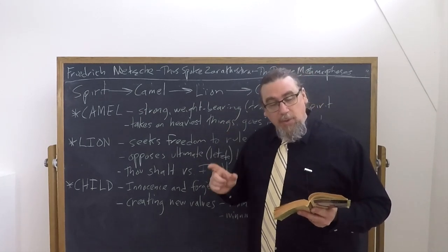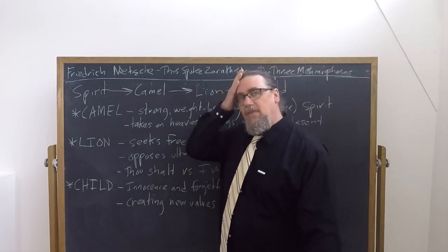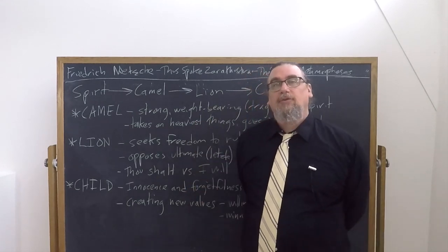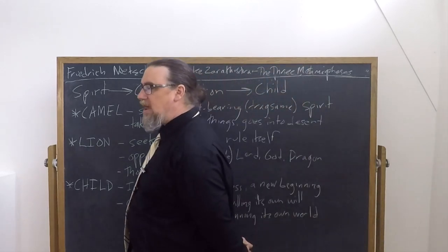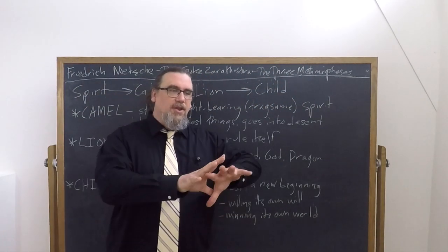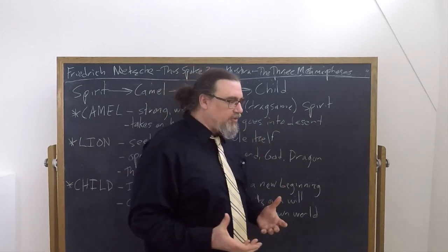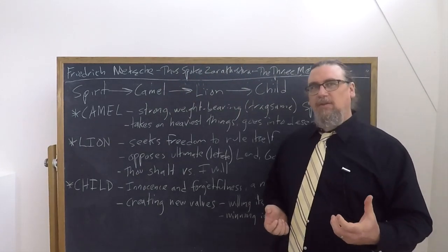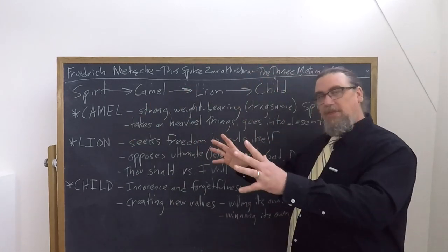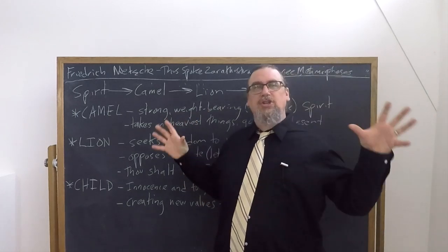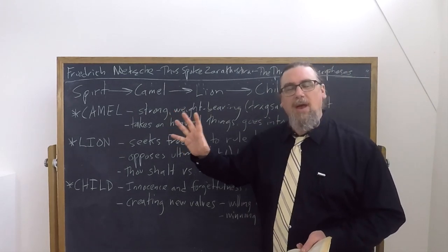So Nietzsche goes on and he says: to create freedom for itself and a sacred no — even to duty — the lion is needed for that, my brothers. We have to turn ourselves into lions so that we can say a sacred no. Now, this is not yet something positive, this is not yet a way forward, but it's needed to clear the space in which freedom can be exercised. Without that exercise of freedom, we cannot go further. So we first have the camel — we carry all the things out into the desert. Then we have the lion — we shed those burdens, we confront the dragon that seems to have all the answers, and we say: forget you, I'm free.